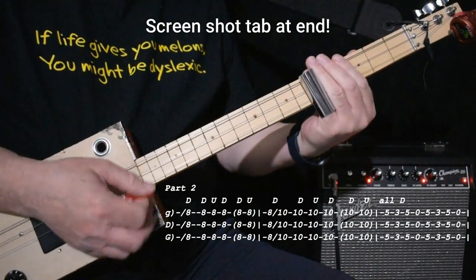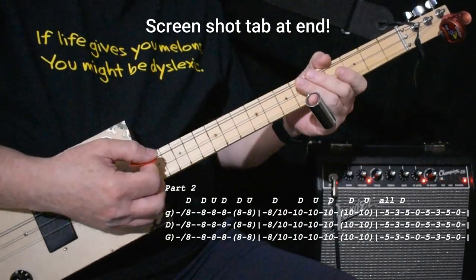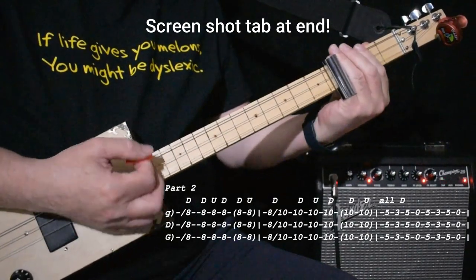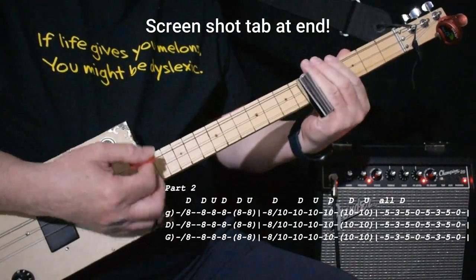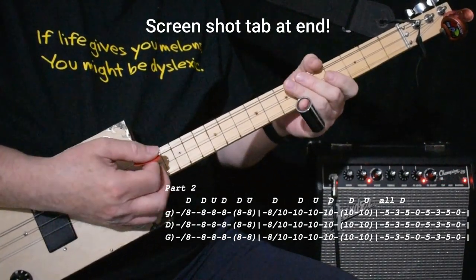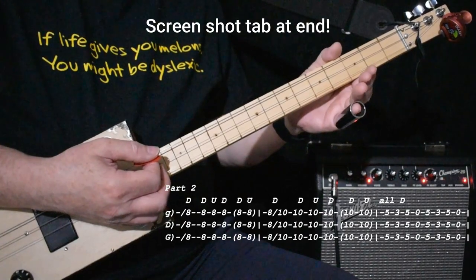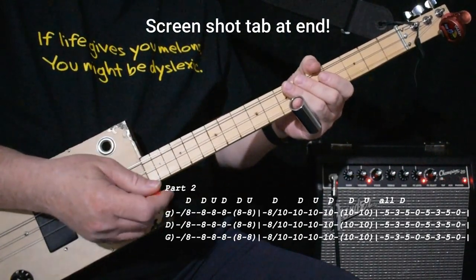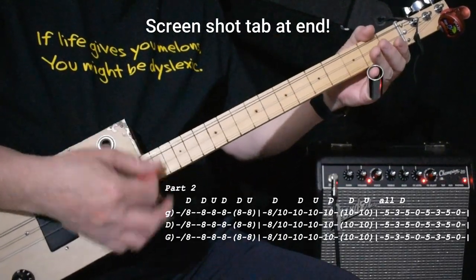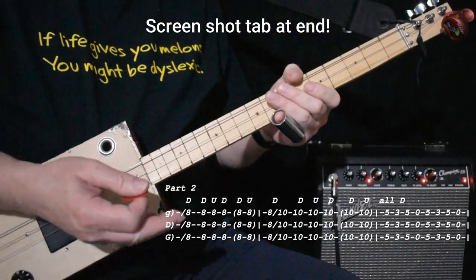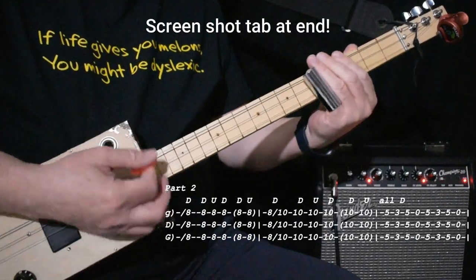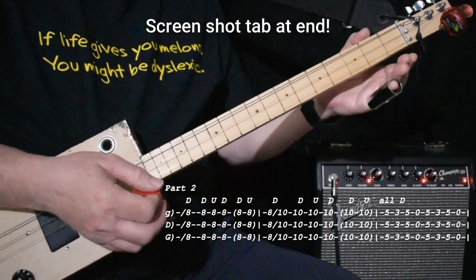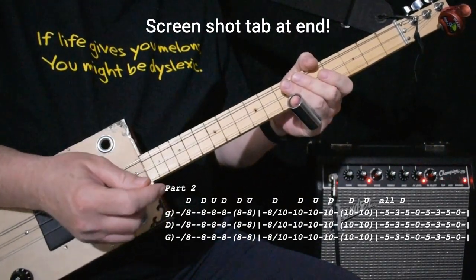And that part's really straightforward. Five, three, five, zero. I find myself doing down strokes. Because all those chords are really equally important. Doesn't have the same feel as the beginning of the song, where different accents were more important. Yeah, so a little down strokes, I think, is the way to go on that.